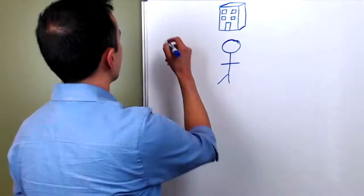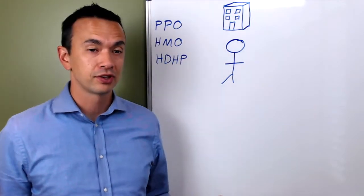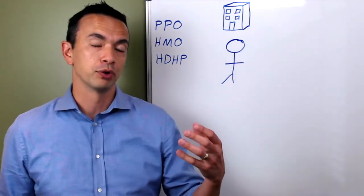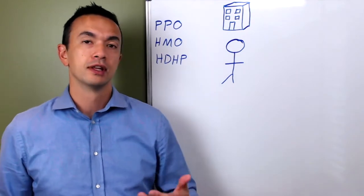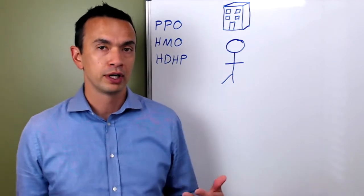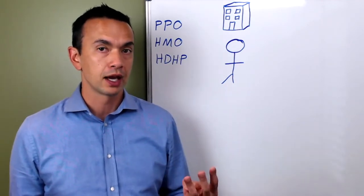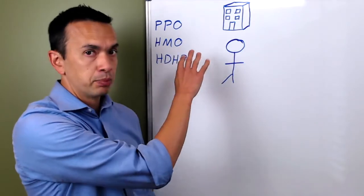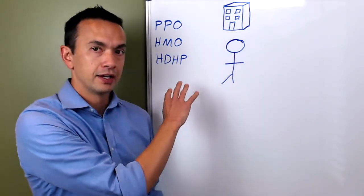Alright, let's get started. First, we're going to start off with the fact that you work for a company and whenever you're enrolling for your benefits, you have to make a decision on what health insurance plan you want to get. That can be broken down into three main categories: first there's a PPO plan, the HMO plan, and then what's called a high deductible health plan.